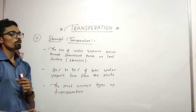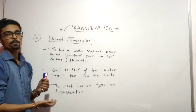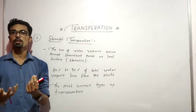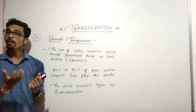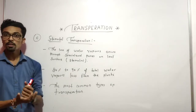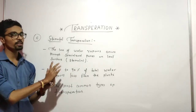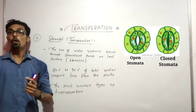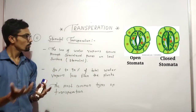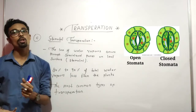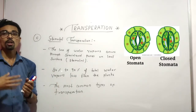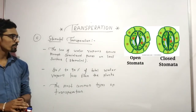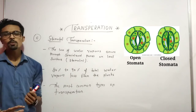Stomatal transpiration is the last type of transpiration. The term indicates that stomata are used — stomata function in the opening and closing process. The green part is associated with the mouth structure, and there is cytoplasm involved. Stomata are used in this transpiration process.